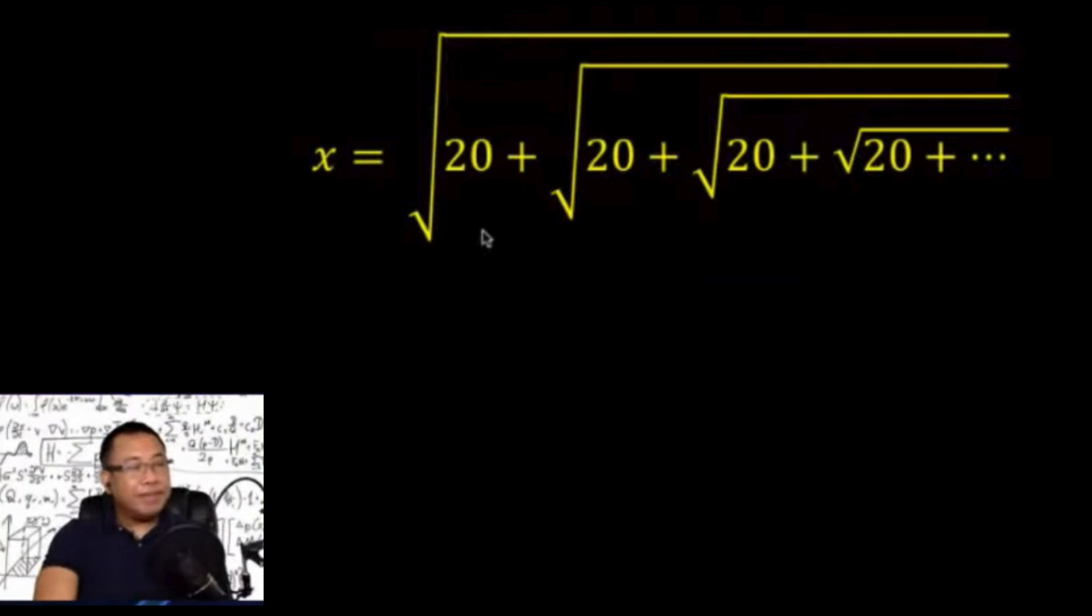Okay, here's the explanation. We have this expression: the square root of 20 plus the square root of 20 plus the square root of 20 plus the square root of 20. Now when you have this kind of problem, we can think of this as a problem under self-similarity.